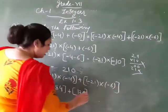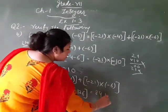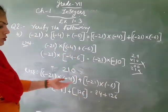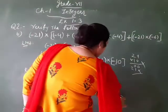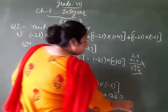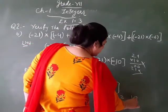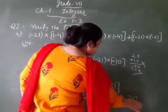Now we add them: 84 plus 126. Both are positive, so plus sign is simple. Now we add: 6 plus 4 equals 10, carry 1. 8 plus 2 is 10, plus 1 is 11, carry 1. 1 plus 0 is 1. Answer is 210.